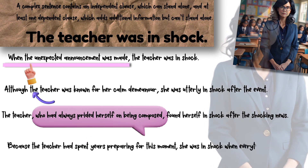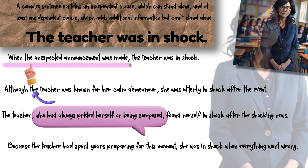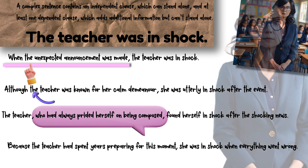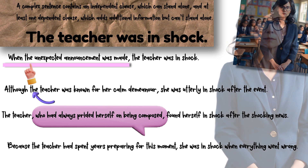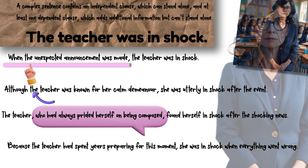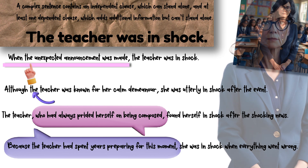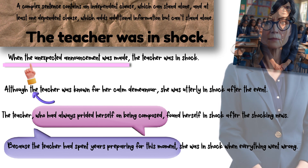Four: 'Because the teacher had spent years preparing for this moment, she was in shock when everything went wrong.' Lastly, we have a causal complex sentence. The dependent clause here — 'because the teacher had spent years preparing for this moment' — explains why her shock is significant. It adds an emotional layer and context that makes her reaction relatable and profound.